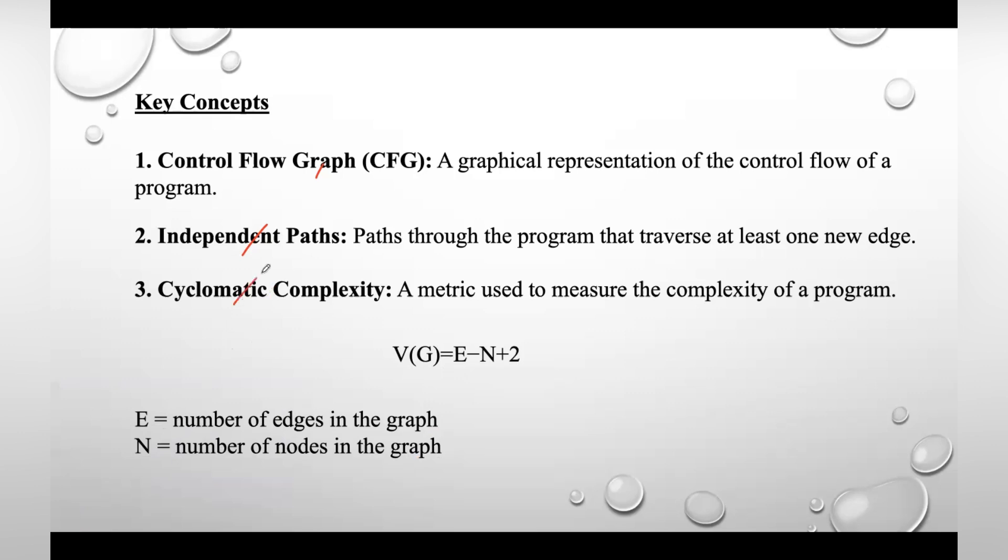Next, you need to calculate cyclomatic complexity, which is a metric used to measure the complexity of a program. It can be calculated based on the control flow graph and helps in determining the number of independent paths. It can be taken as V(G) = E - N + 2.